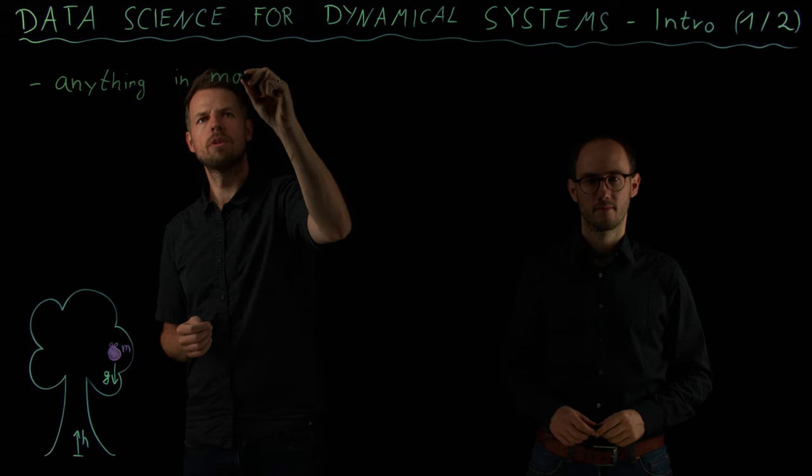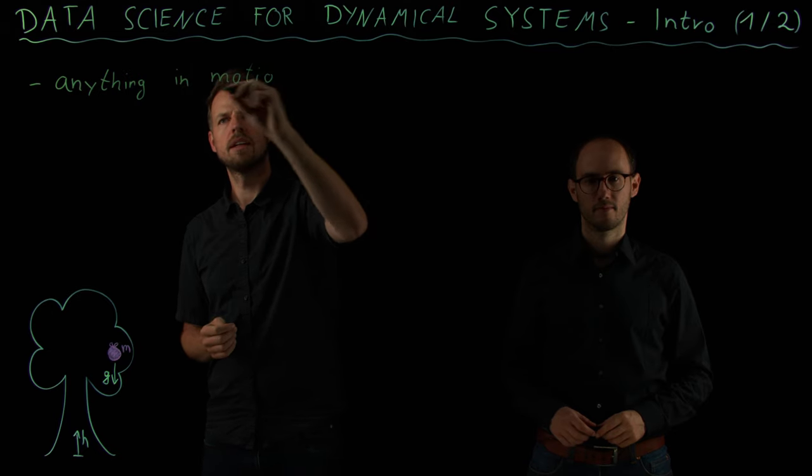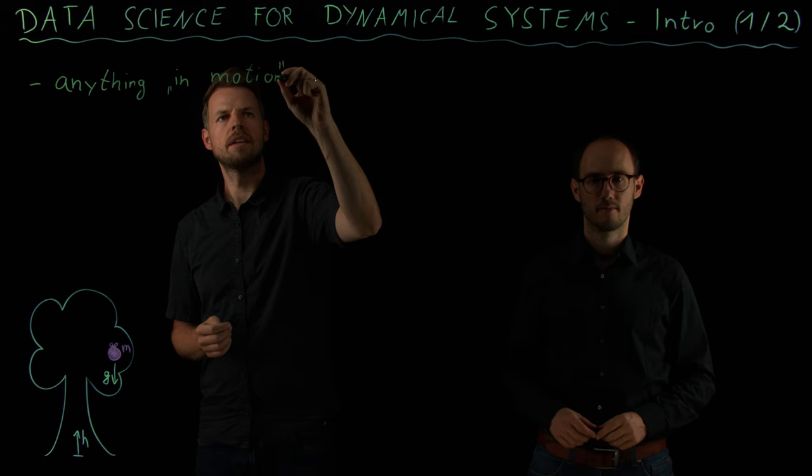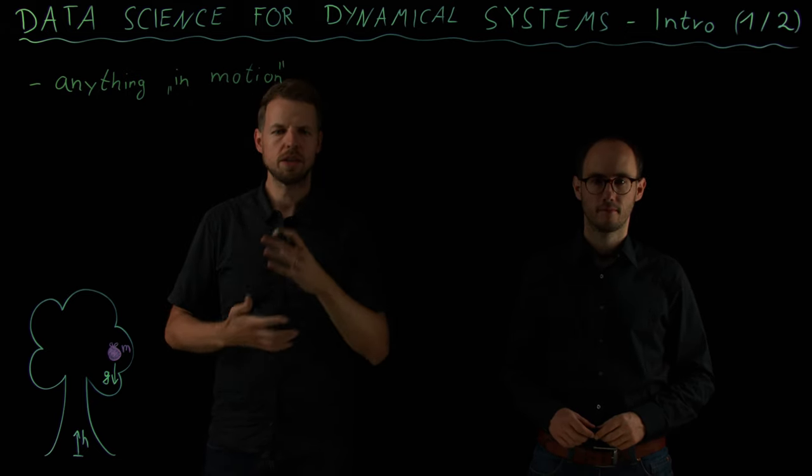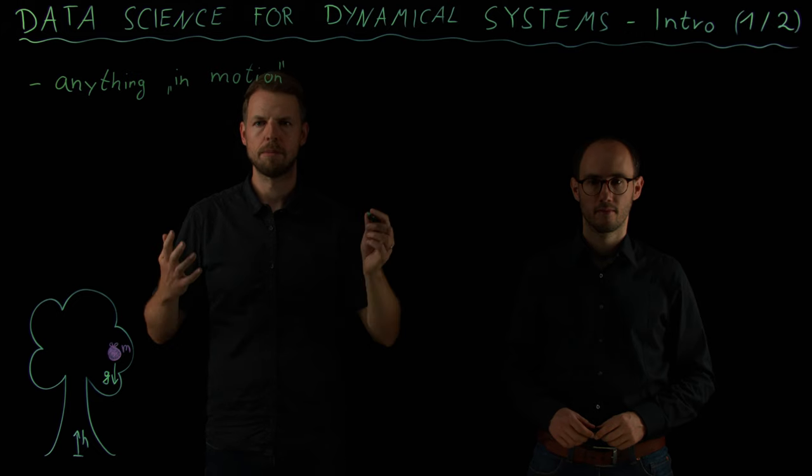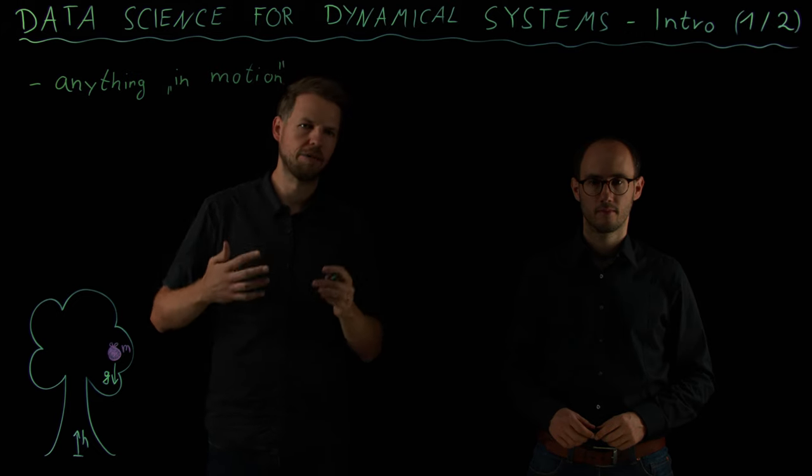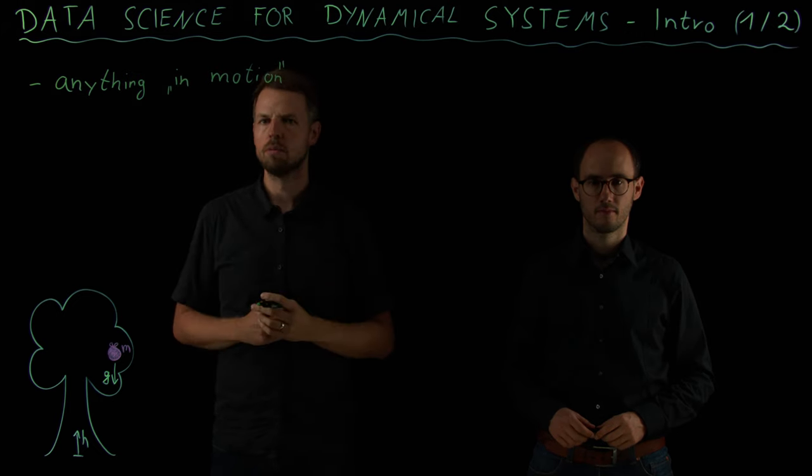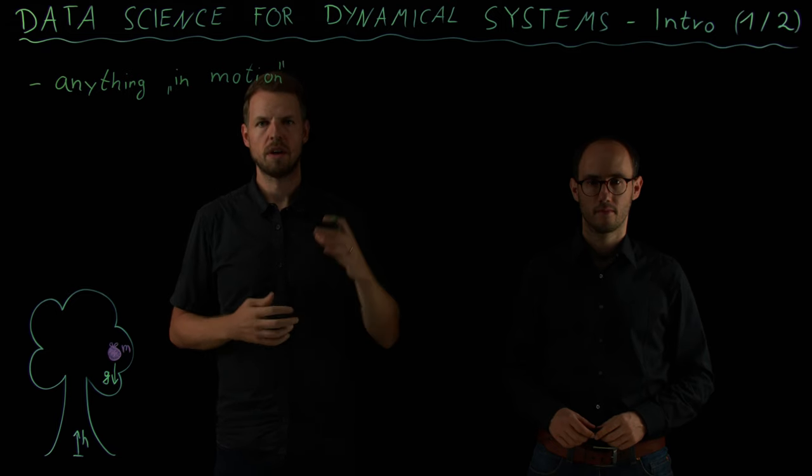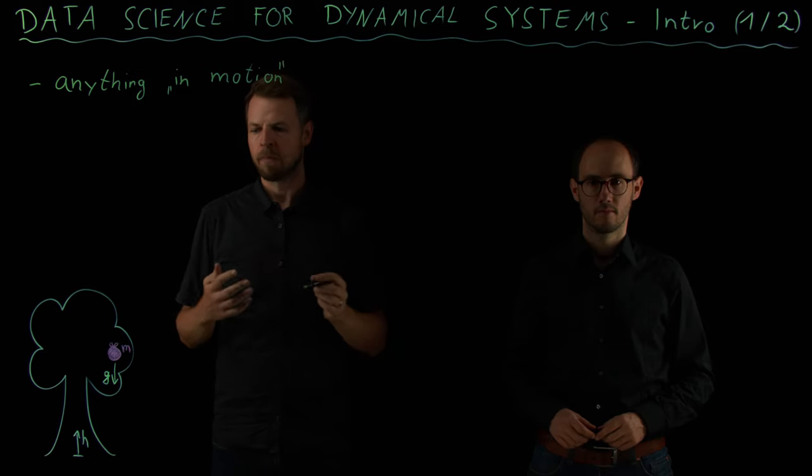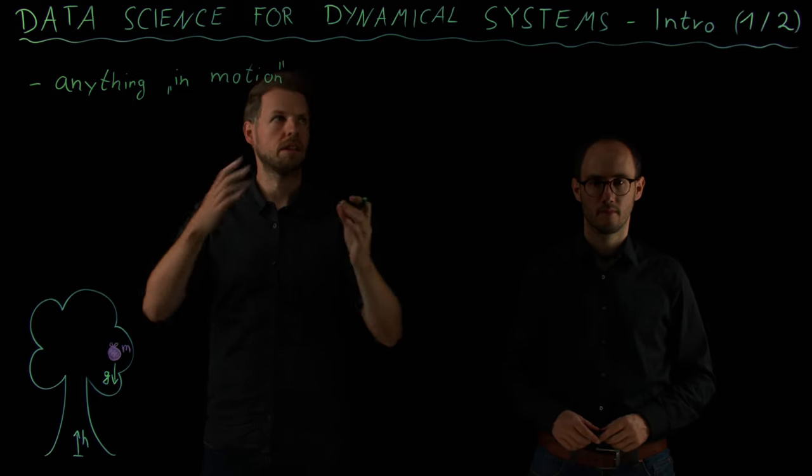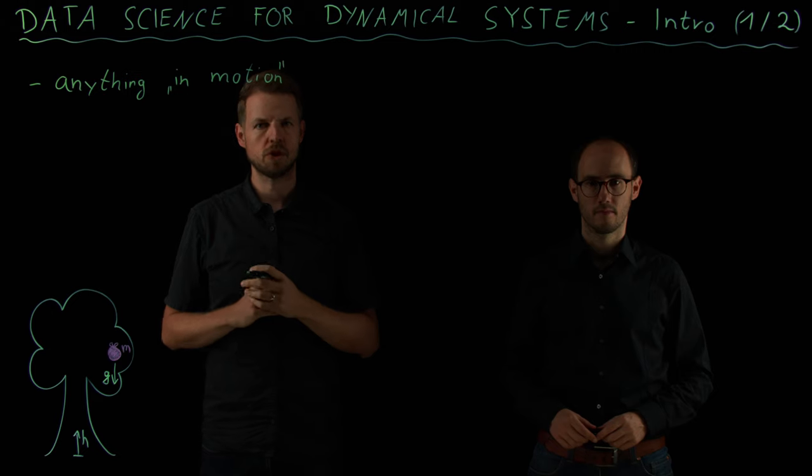Anything in motion means I have a system that changes over time. For example, a car driving or a plane flying. The temperature of a room may change over time. So we have a system that has a dynamic aspect to it. It changes over time. And this is what we consider dynamical systems in the most general way.